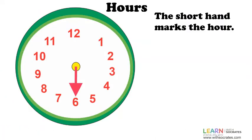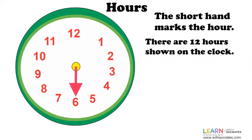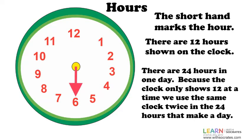Hours. The short hand marks the hour. There are 12 hours shown on the clock. There are 24 hours in one day because the clock only shows 12 at a time. We use the same clock twice in the 24 hours that make a day.